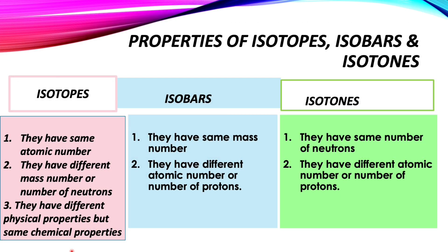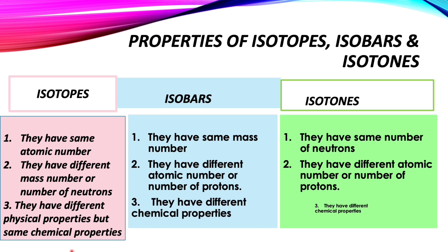For isotopes, their physical properties are different but chemical properties are the same. For isobars and isotones, they have different chemical properties. Isotopes have the same chemical properties because they have the same number of electrons, and electrons determine the chemical properties.